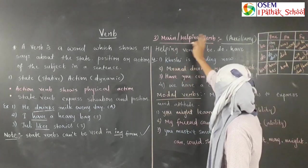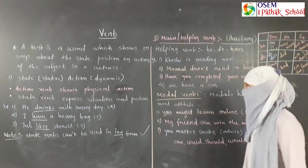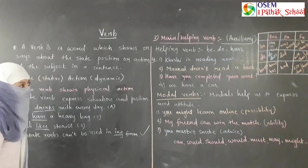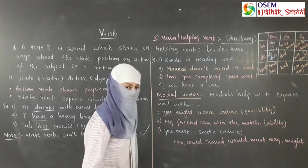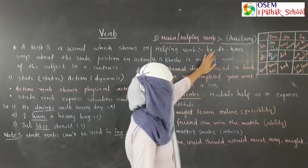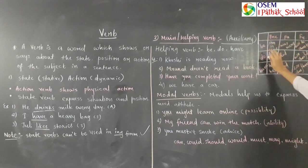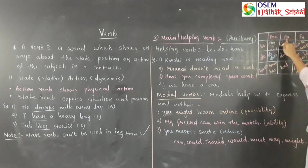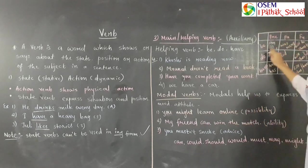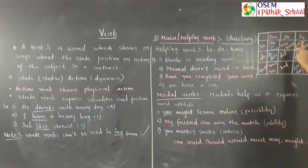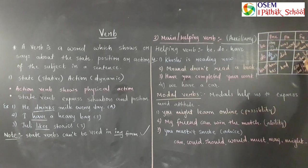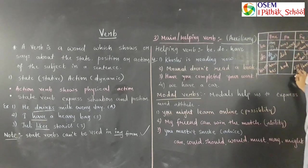Our second type is the main verb and helping verb — also called auxiliary verb. Helping verb helps in the sentence. We have three main helping verbs: 'be,' 'do,' and 'have.' In present tense, 'be' takes the forms is/am/are; in past tense, was/were; in future tense, will be/shall be. 'Do' takes do/does in present, did in past, and will/shall plus do in future. 'Have' takes have/has in present, had in past, and will/shall plus have in future.